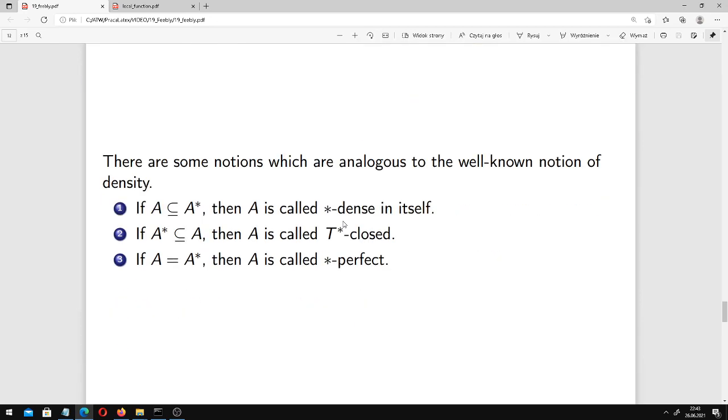There are some notions which are analogous to the well-known notion of density. If A is contained in its local function, then A is called star dense in itself. If A star is contained in A, then A is called T-star closed. If A is equal with A star, then A is called star perfect.